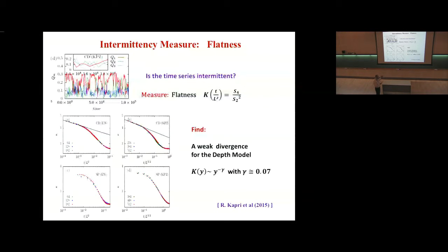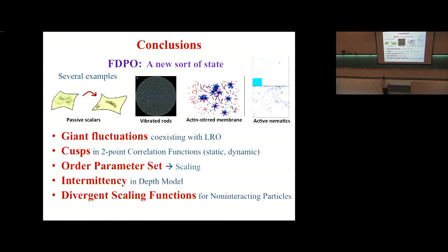Dynamics is also interesting. There's intermittency in one of the models. But I'll conclude by saying that this fluctuation-dominated phase ordering is a sort of a new and interesting sort of state that seems to arise in many situations. Its characteristic is really giant fluctuations in one point functions, cusps in two point functions. The thing is that you can't deal with a single order parameter. You have to deal with a whole bunch, infinite set. Actually, even that is not enough. What you need to do is look at joint probabilities. There's intermittency in the time series. And something that I didn't talk about today is what happens if the particles are actually non-interacting purely. It's even more interesting. Clustering is sort of clustering with very divergent functions, very singular functions.